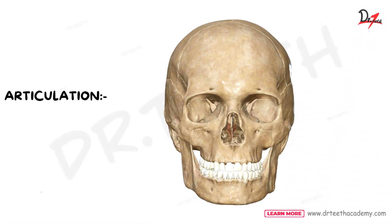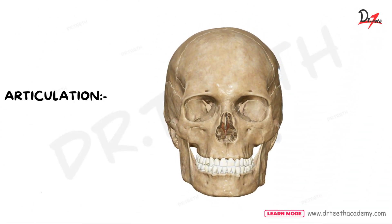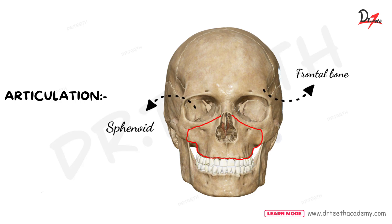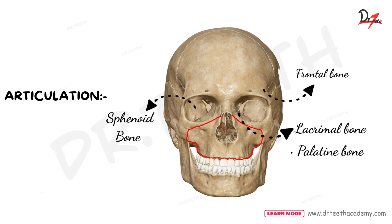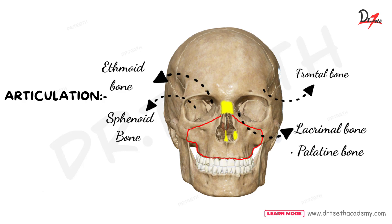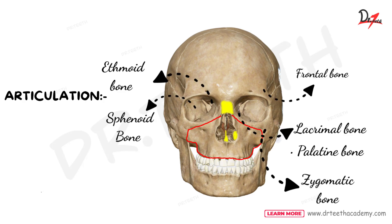Talking about articulations in maxilla. The maxilla articulates with numerous bones: superiorly with the frontal bone, posteriorly with the sphenoid bone, palatine, lacrimal bone and ethmoid bone, medially with the nasal bone, vomer and inferior nasal concha, and laterally with the zygomatic bone.